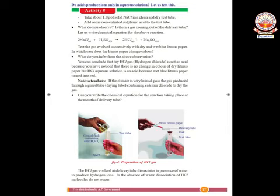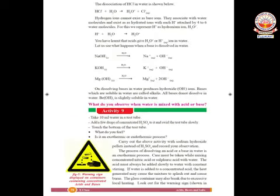In the test tube, sodium chloride and sulfuric acid are taken together. They undergo a chemical reaction and hydrogen chloride gas is liberated from the mouth of the test tube, while sodium sulfate salt is also formed. This hydrogen chloride gas, being acidic in nature, turns blue litmus paper red when held near the mouth of the test tube, confirming the liberation of acidic hydrogen chloride gas.